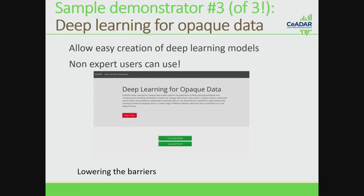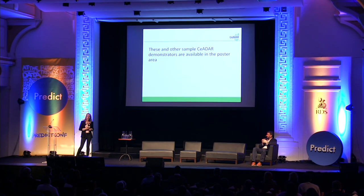The third and final demonstrator, which we've just released, is called Deep Learning for Opaque Data. We wanted to enable deep learning to be accessible for companies, allowing easy creation of deep learning models where you don't have to be an expert user. This demonstrator lowers the barriers to entry for trying out deep learning on unstructured data — your opaque data — like an image file or a binary file from a log, which is not easy to break down into features for traditional machine learning. All of those demonstrators and other CEDAR demonstrators are available in the poster area later for anyone who wants to discuss them.